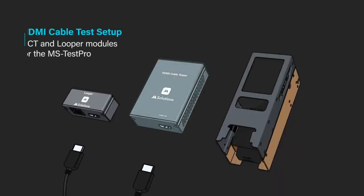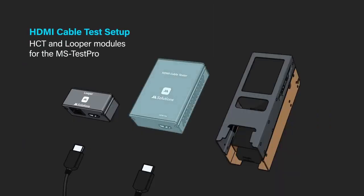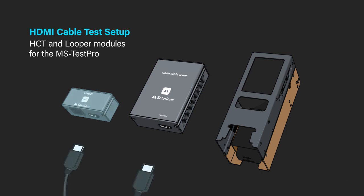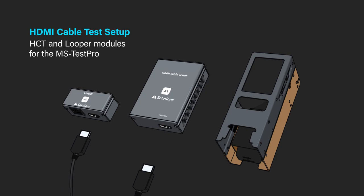Before turning your MS Pro on, connect the HCT module to the looper unit using the HDMI cable you want to test. Please note the HCT module will only test passive HDMI cabling and not active or AOC fiber cables.